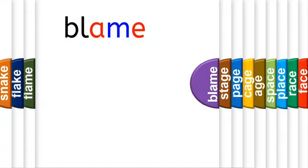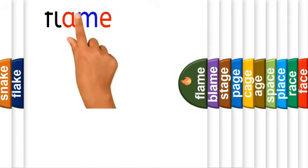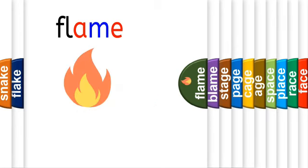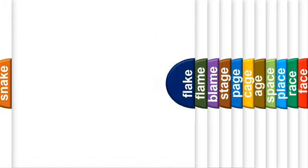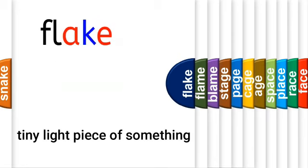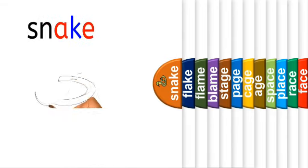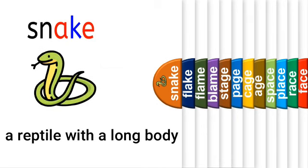And then, 'blame'. Blame means to complain about others. The next word: 'flame'. You must see a flame while someone cooks. Flame means the bright reddish-orange color of fire. And then, 'flake' — a tiny light piece of something. And the last word: 'snake'. Are you scared? Snake is a reptile with a long body.